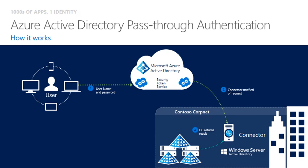The on-prem AD returns the result back to the connector, who in turn returns it back to Azure AD. Assuming the result from AD was successful, the user is returned a token, or if further procedures are necessary, those are initiated.